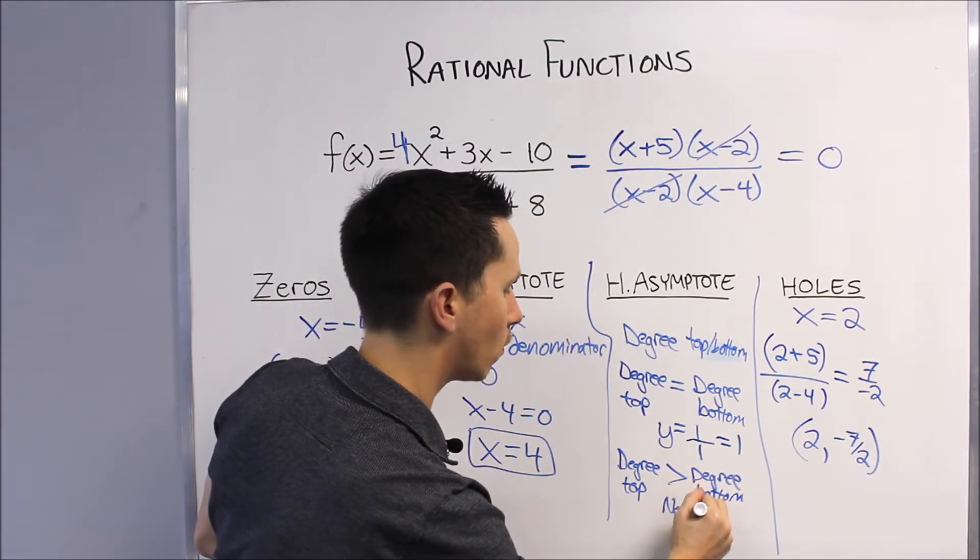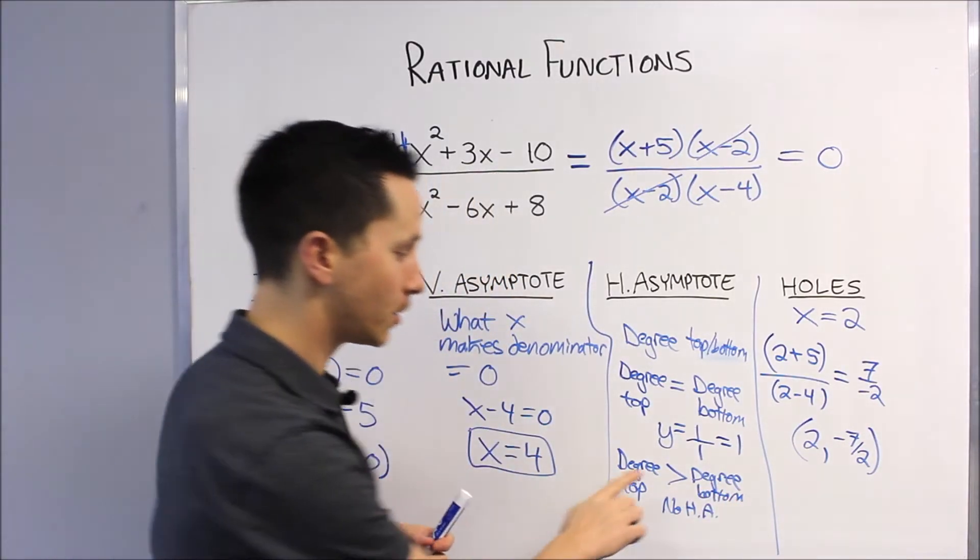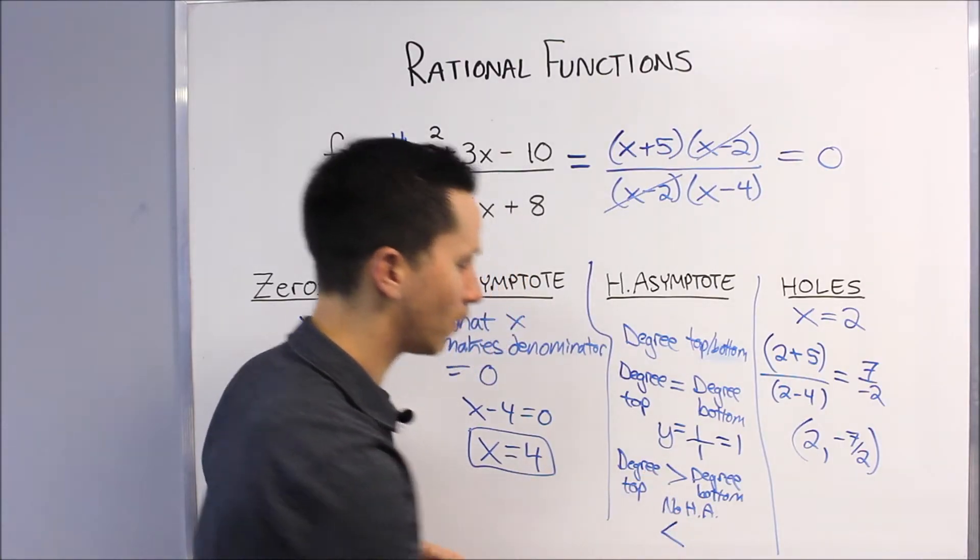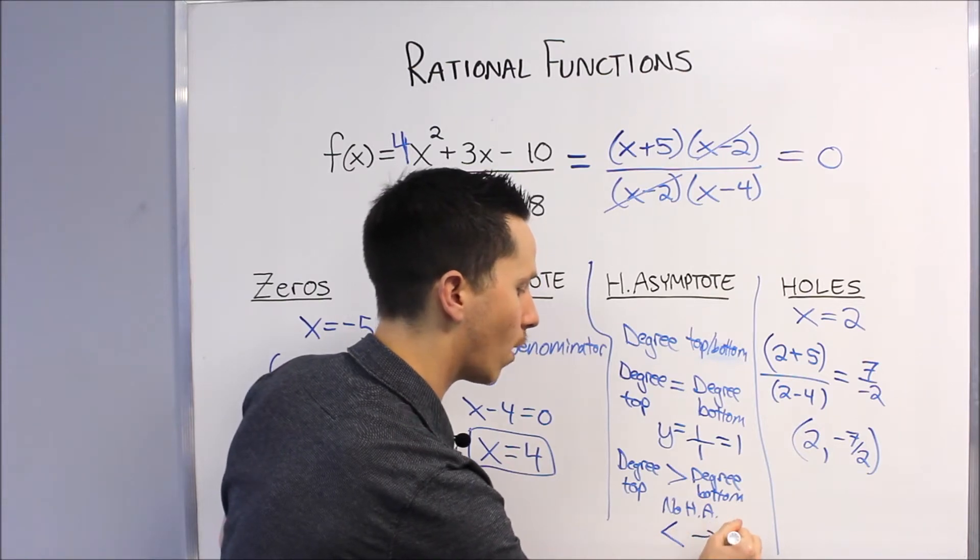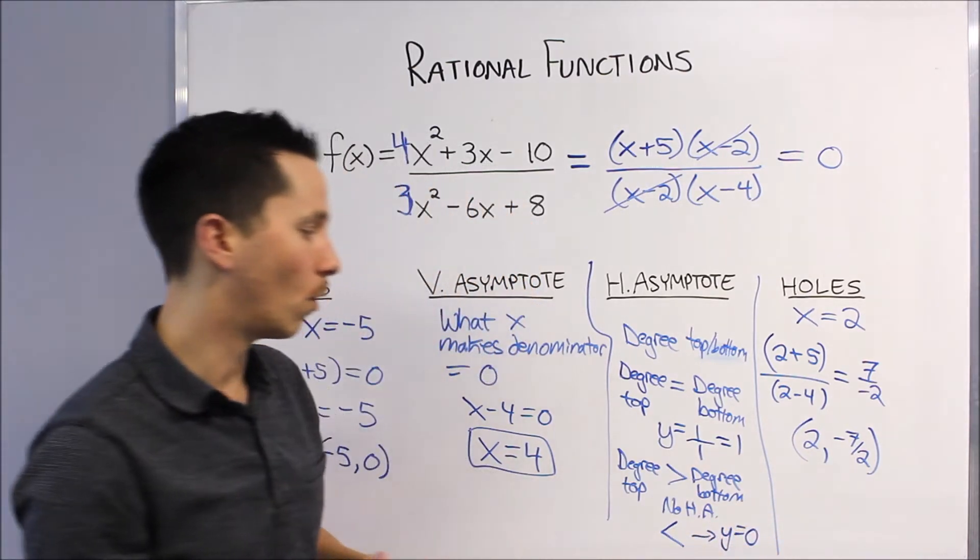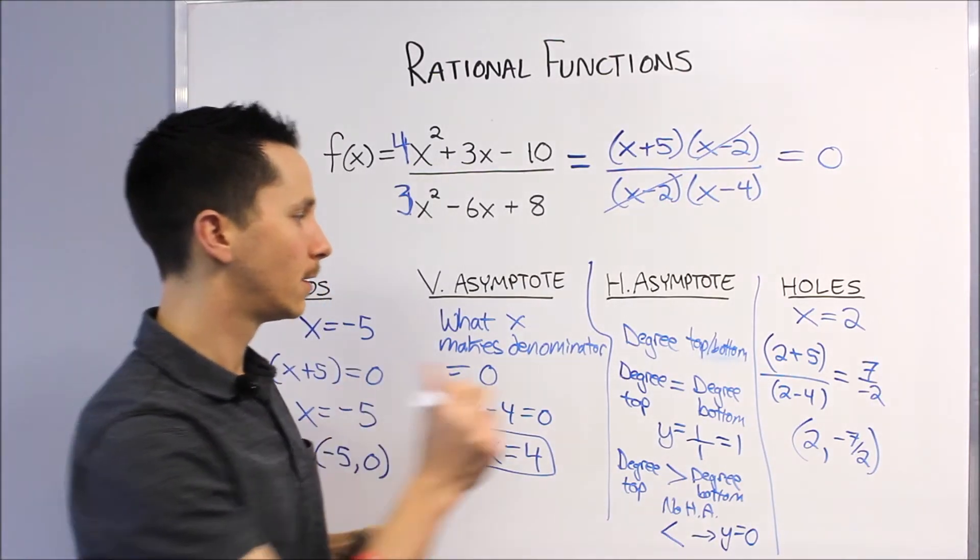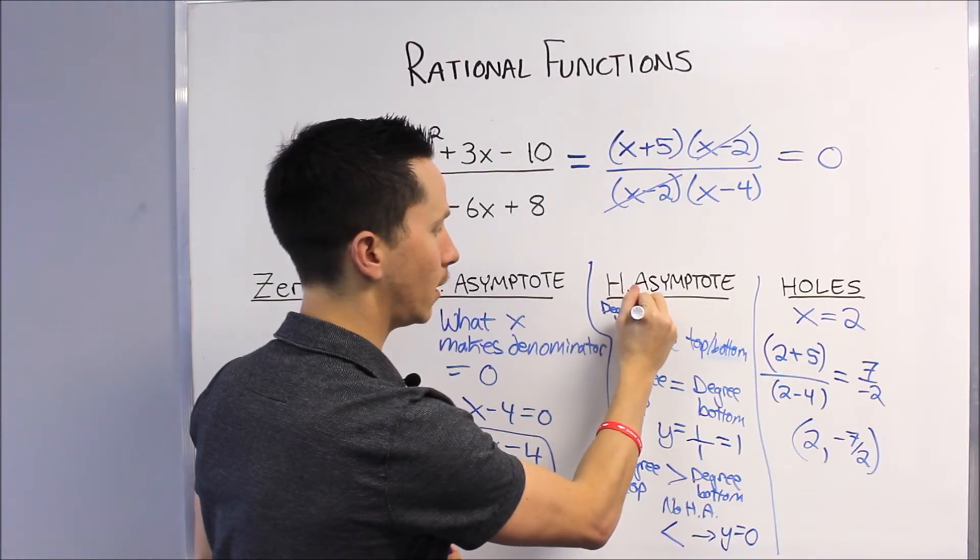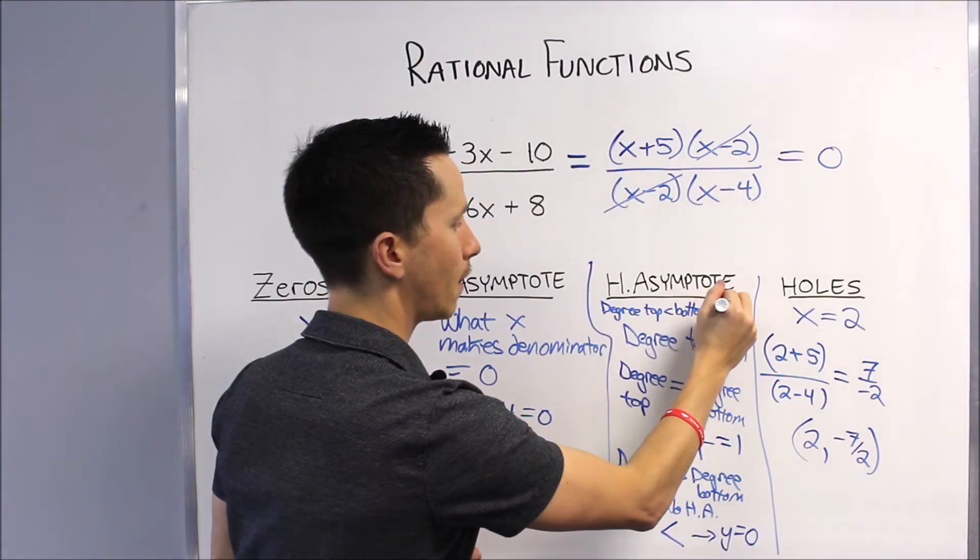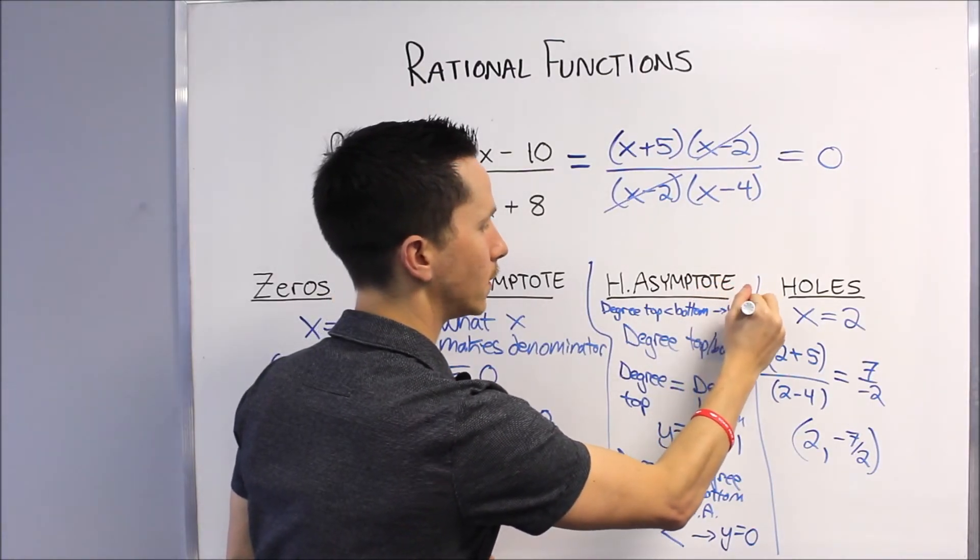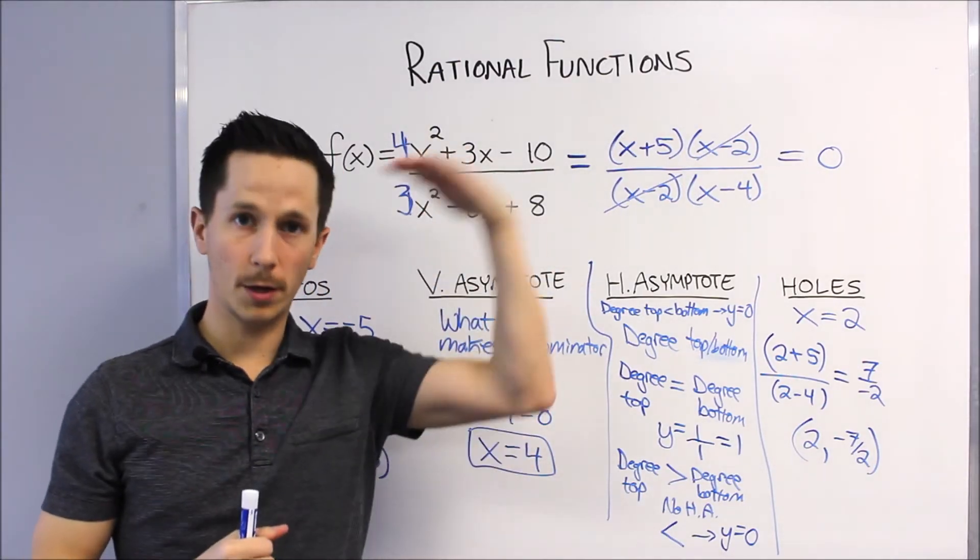And if we switch this—so if the degree of the top is less than the degree of the bottom—then y equals 0, or the x-axis, becomes your horizontal asymptote. I'll maybe write that one up here because it does come up a lot. Degree top is less than bottom, that is where y equals 0 is your horizontal asymptote.